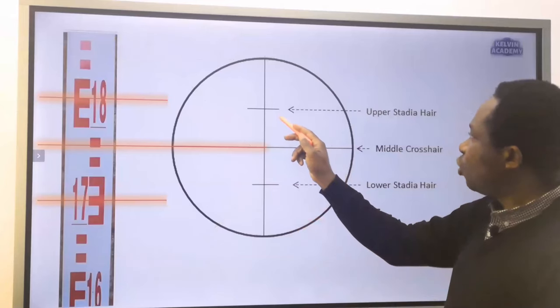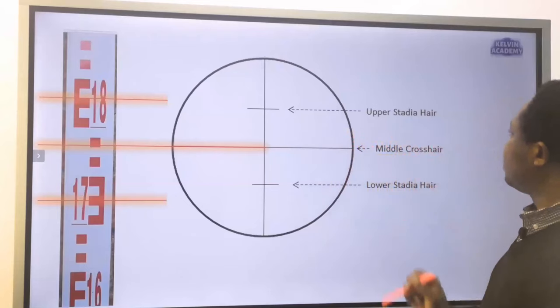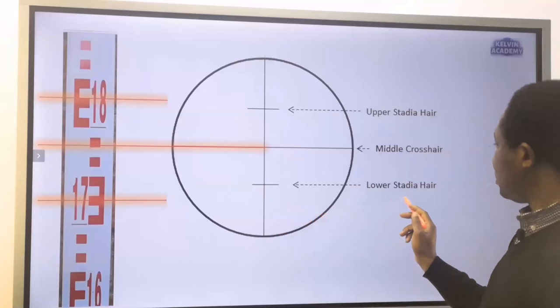Another name for the top hair is the upper stadia hair. Another name for the bottom hair is lower stadia hair.